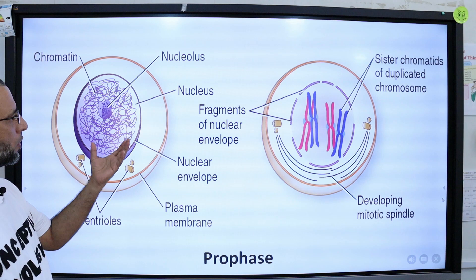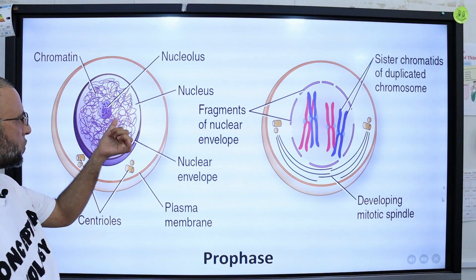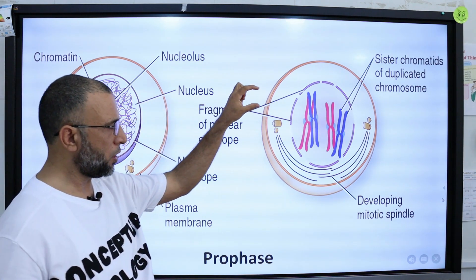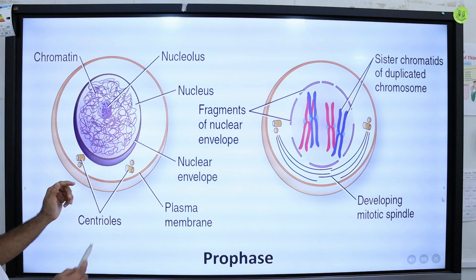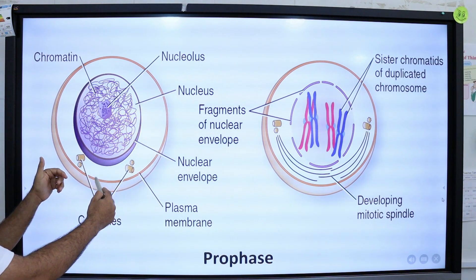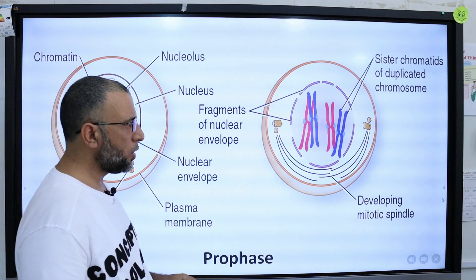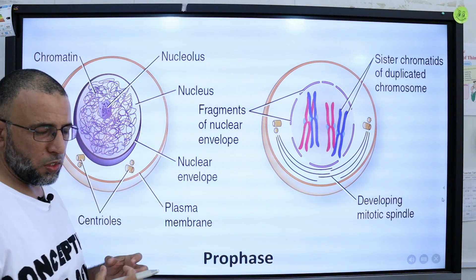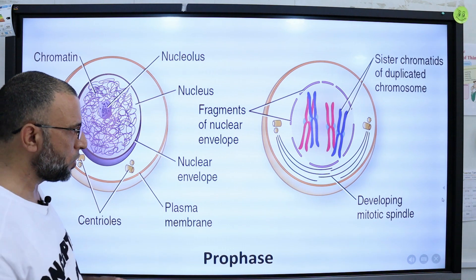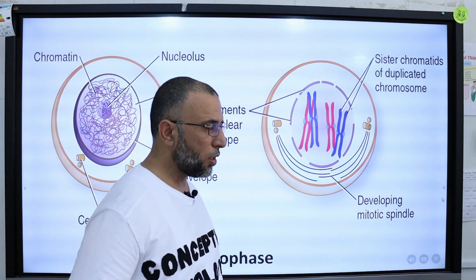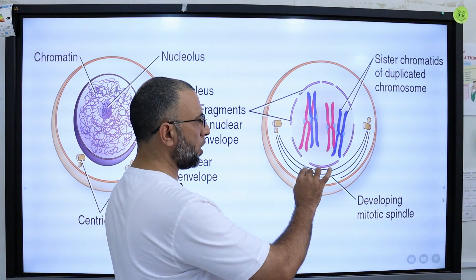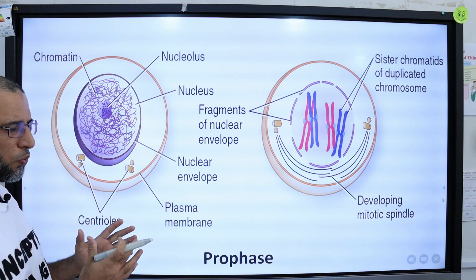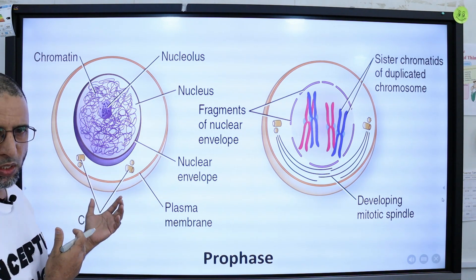In non-dividing cells, chromosomes are present in the form of a thin thread-like structure called the chromatin network. In dividing cells, they condense and take the shape of a chromosome. Centrioles divide into 2 daughter centrioles and move toward opposite poles, and the mitotic spindle starts to appear between them. An important identification of prophase is that the nuclear membrane is still present around the chromosomes. When the nuclear membrane disappears, that marks the end of prophase and the start of metaphase.